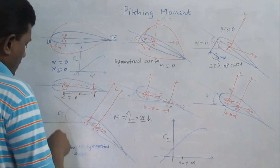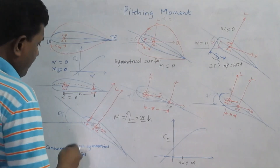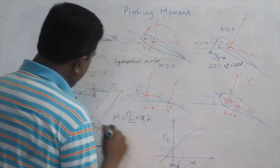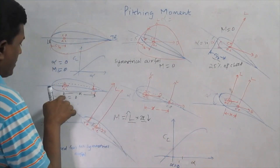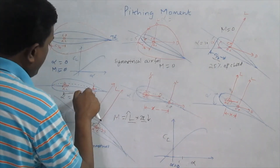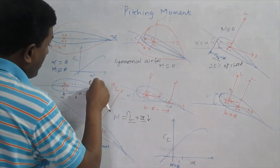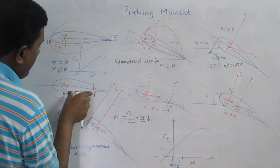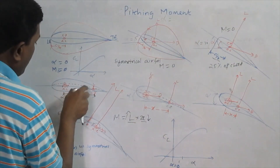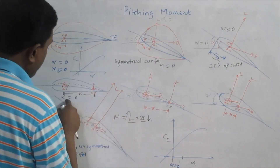In the case of an unsymmetrical or cambered aerofoil, at angle of attack zero, there is still some lift. That lift acts at the center of pressure, because the resultant force acts only at the center of pressure. The lift is very small, but the center of pressure lies very far from the aerodynamic center. Because of that, the moment is fixed — the moment is nothing but lift multiplied by the distance X.